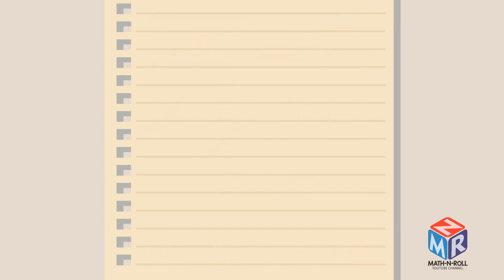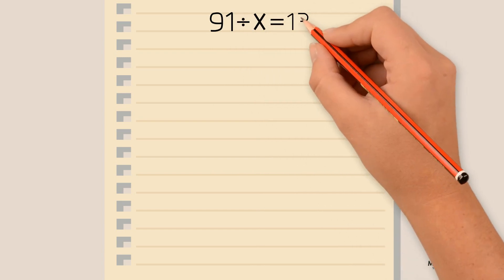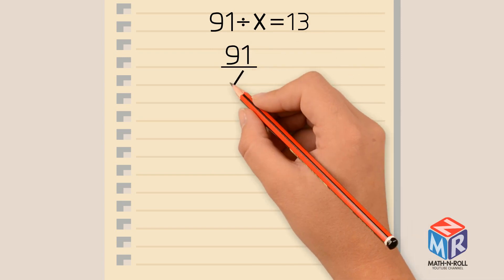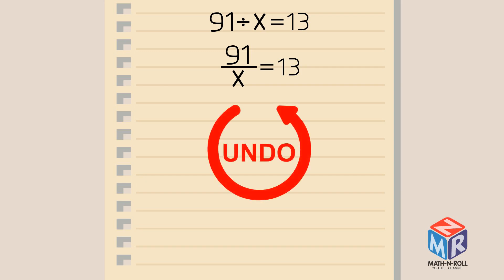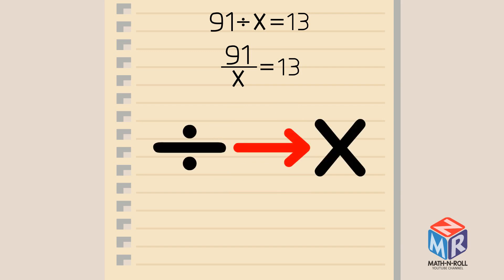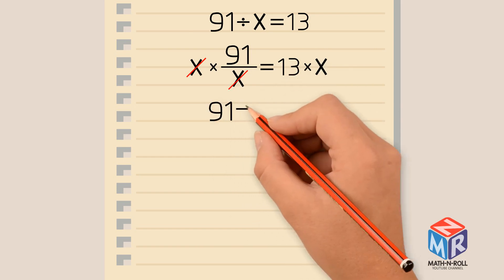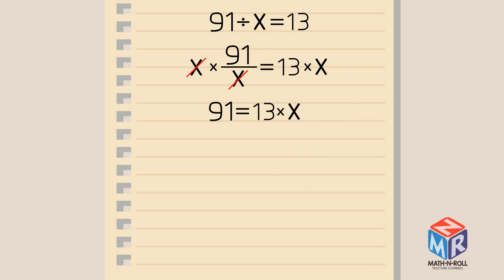Let's try another example. 91 divided by x equals 13. Once again, we can write this equation in fraction form: 91 over x equals 13. Right now, our x is not by itself because it is dividing 91. To undo this operation, we multiply both sides by x. Now we can cancel out. We are left with 91 equals 13 times x. Once again, x is not by itself because it is being multiplied by 13.